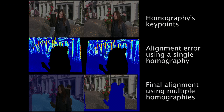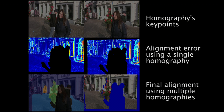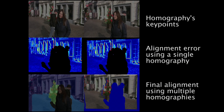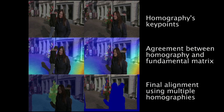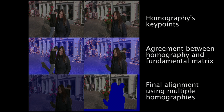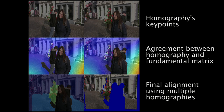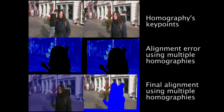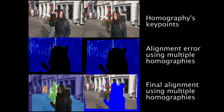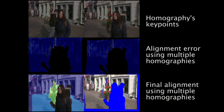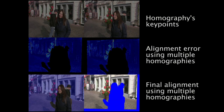In the middle row, we measure the alignment error for each homography. This error is low for each corresponding region of the scene. In addition, we measure the agreement between each homography and an estimate of the fundamental matrix. Regions where the homography is in good agreement with the fundamental matrix are shown in blue, and where they are not are shown in red. Based on the alignment error and the agreement with the fundamental matrix, we select different homographies for aligning different regions of the scene. In the bottom row, we show the region selected for each homography and the resulting frame alignment.